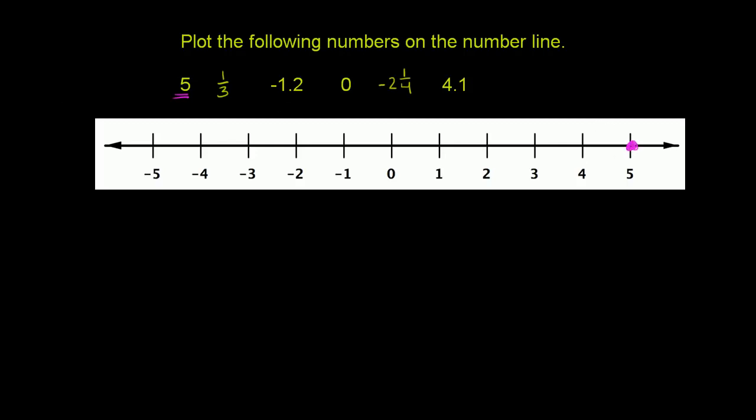Then we get 1/3. 1/3, so 1/3 is between 0 and 1. And we can actually split this into thirds. So that would be 1/3, 2/3, and then 3/3, which is 1. So 1/3 is going to sit right over there. It's 1/3 of the way from 0 to 1. That's 1/3 right over there.